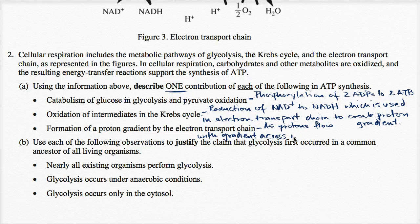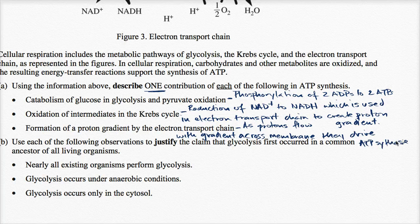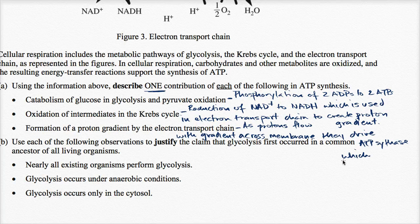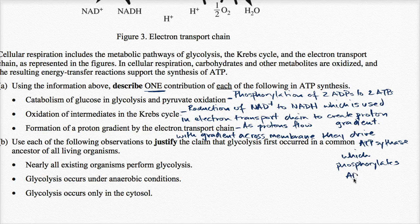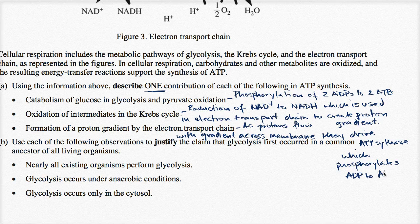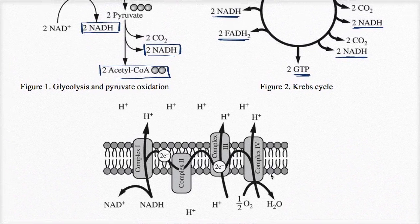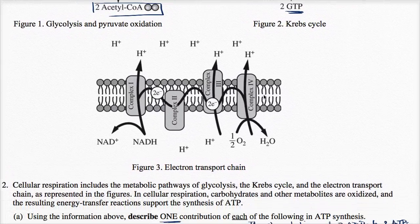And if you're actually taking the AP test, you might want to just do it below so you might have more space. But I'll just fill it in here. As protons flow with gradient across membrane, they drive ATP synthase, which oxidatively phosphorylates ADP to ATP. And once again, if everything I'm saying here sounds foreign, and if these diagrams don't make a lot of sense to you, if they don't trigger a pleasurable memory in your head, I encourage you to watch the videos on Khan Academy, where hopefully you'll get a little bit more intuition for the things that I am talking about.